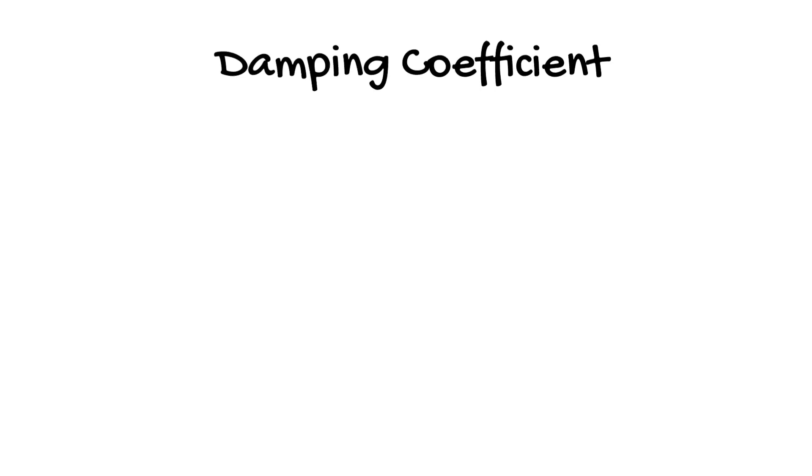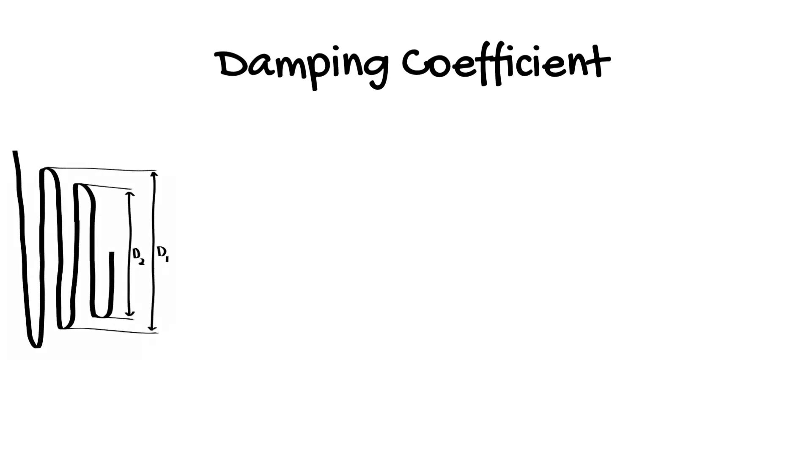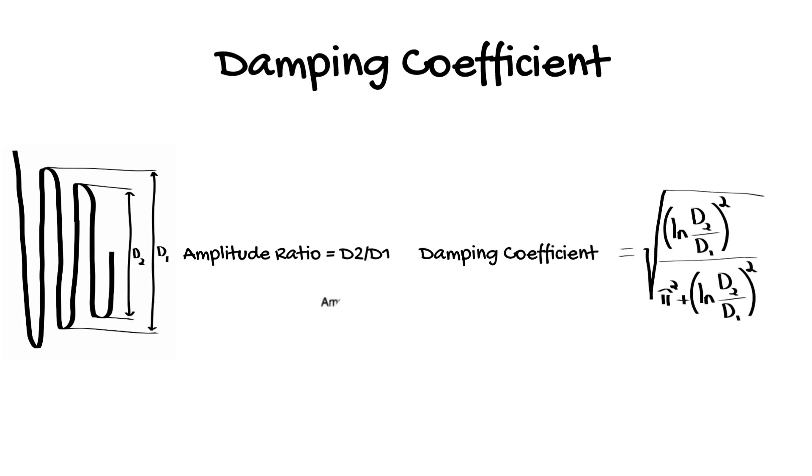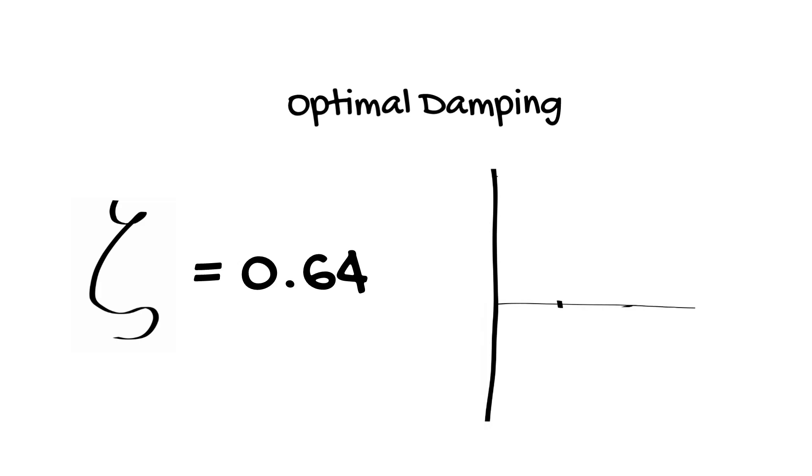If we're going to talk about damping we need to also mention the damping coefficient. This numerically represents the amount of damping present in a system. It is calculated using the ratio of consecutive amplitudes and some fancy maths, although it can also be looked up on a reference table. The optimal amount of damping occurs with a damping coefficient of 0.64. This preserves the frequency responsiveness of the system to react to the next heartbeat without allowing excessive oscillation.